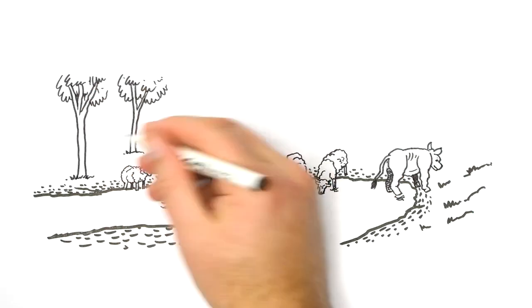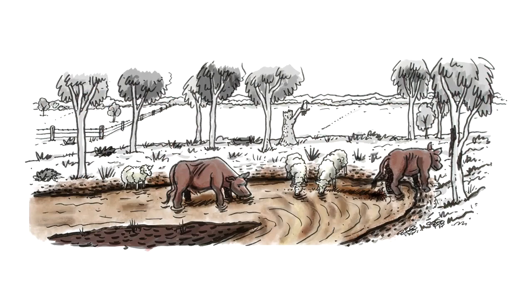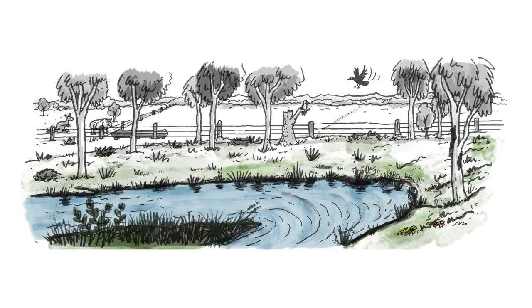Another change is the phasing out of grazing licenses on public land along the waterways. This is being done to improve the water quality of our rivers and streams, as well as improve the quality and quantity of native vegetation along the waterways.